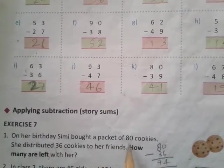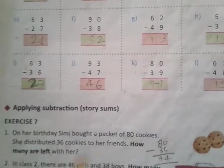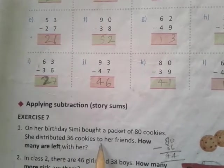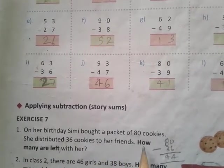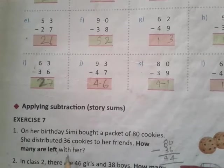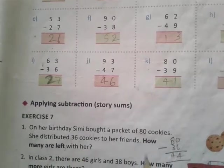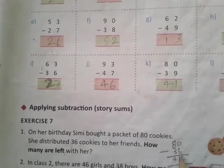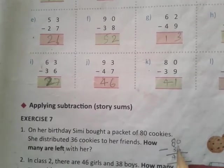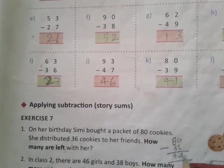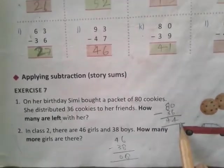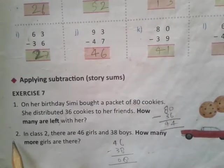Exercise 7. On her birthday, Simi bought a packet of 80 cookies. She distributed 36 cookies to her friends. How many are left with her? 80 subtract 36. 10 subtract 6 is 4, 7 subtract 3 is 4, equals 44.